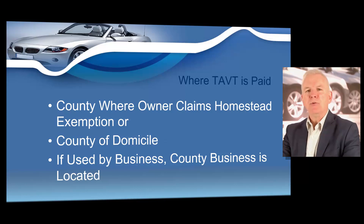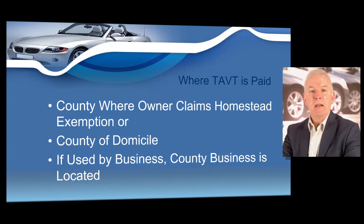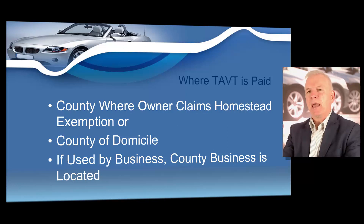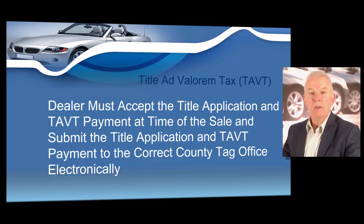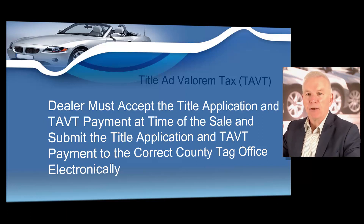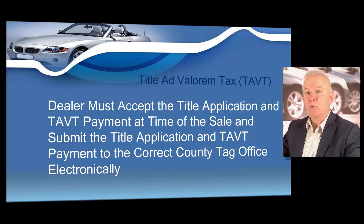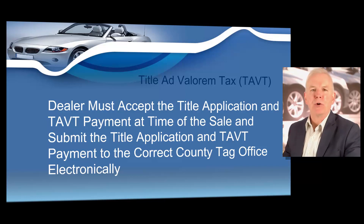Or if the motor vehicle is primarily used in connection with an established business enterprise located in a different county, then it would be transmitted to the county where the business is located. So it's either going to be the county where a customer has a homestead exemption, their home county, or where the business is actually located. The dealer must accept the title application and TAVT payment at the time of the sale and deliver them to the county tag office where the buyer resides, where they have a homestead exemption, or where the business is located. That is what we call "returned" — when you have actually returned that TAVT to the correct county.